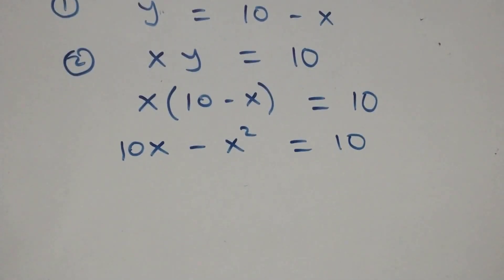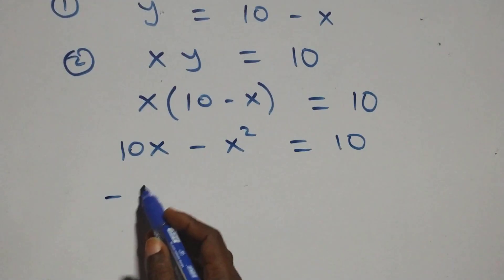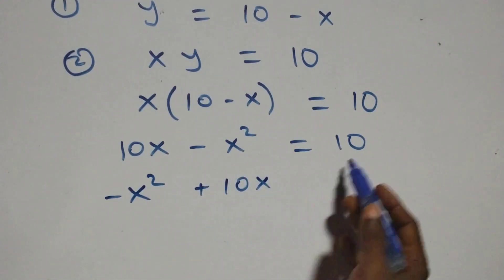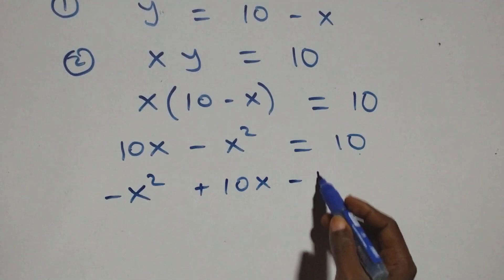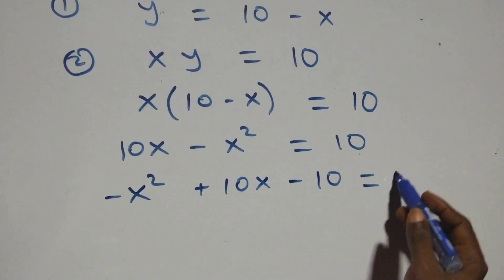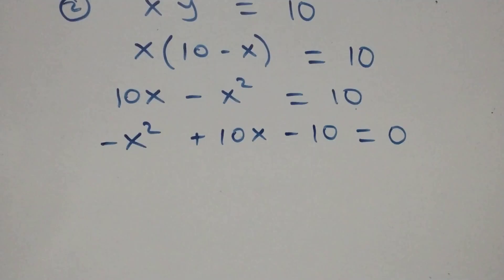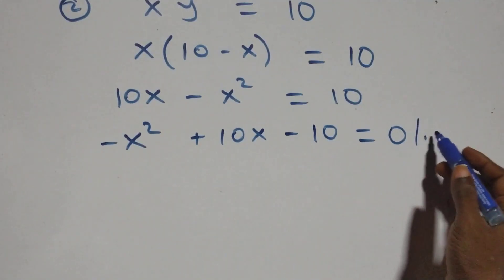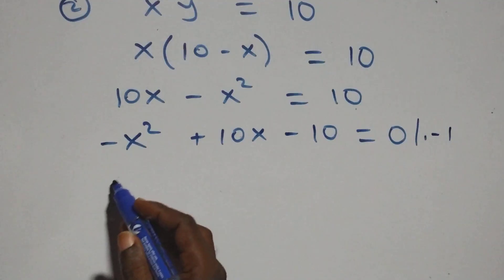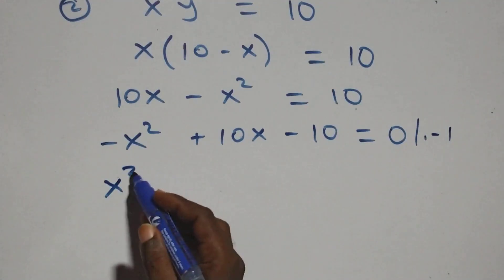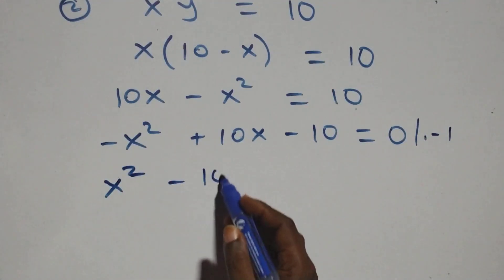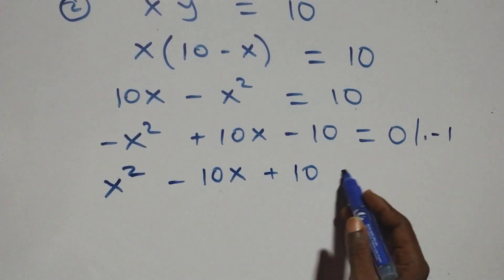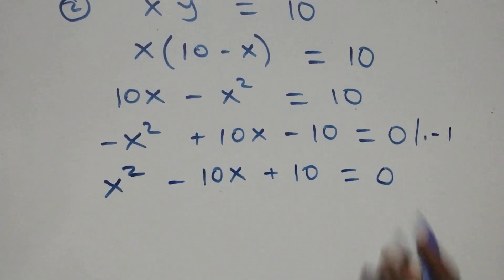Rearranging, we have minus x squared plus ten x minus ten equals to zero. We then multiply through by minus one, and this becomes x squared minus ten x plus ten equals to zero.